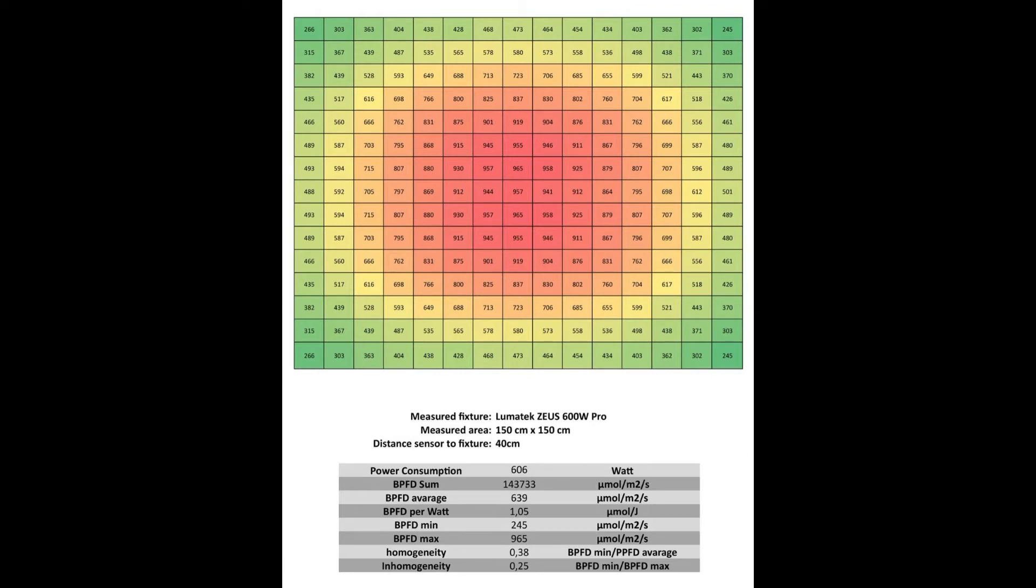The minimum value we have is 245 which is in the right upper corner. The BPFD maximum is 965 which is right in the center of our plot. The homogeneity is 0.38 and the inhomogeneity calculates to 0.25.